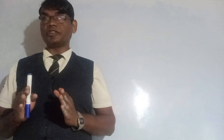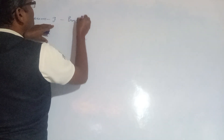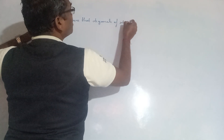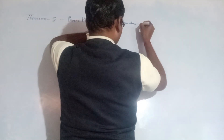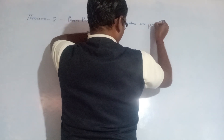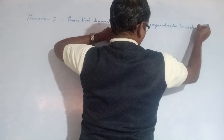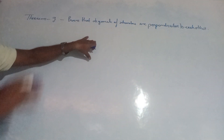Here we will prove Theorem 9: the diagonals of a rhombus are perpendicular to each other. This is the theorem we need to prove — that the diagonals of a rhombus are perpendicular to each other.